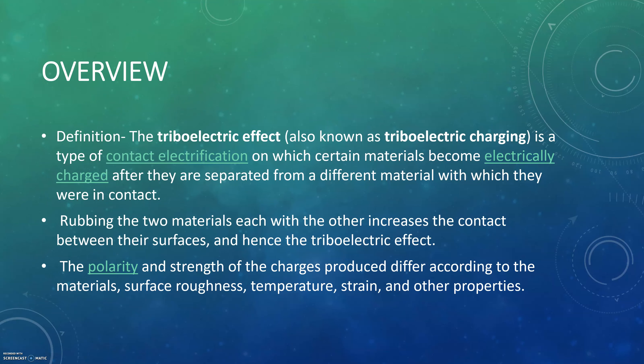As an overview, just a brief definition of the triboelectric effect: it's the type of contact electrification in which materials become electrically charged after being separated from a different material with which they were in contact. Pretty much, it's just the rubbing of two materials, and that's how we get an exchange of electrons and protons. Later in the video, we'll talk about the triboelectric series, which covers the polarity and strength of charges produced and how they differ according to material, roughness, temperature, and other properties.